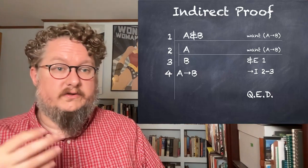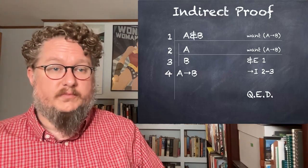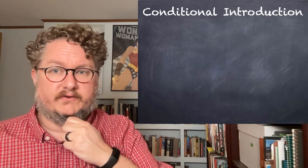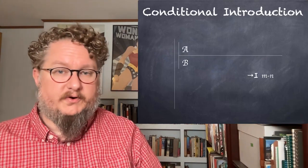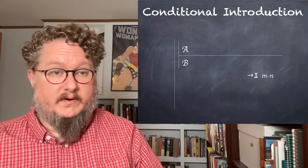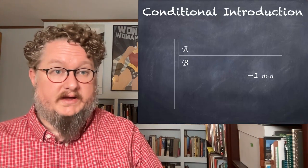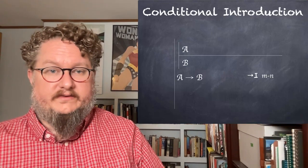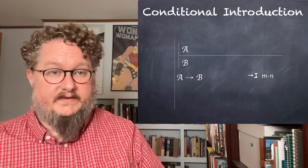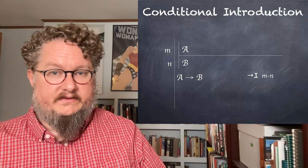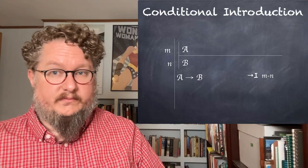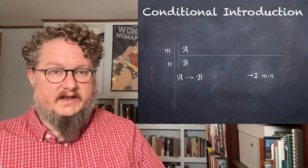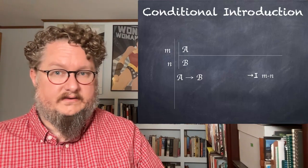I'm going to now go through the additional rules of our natural deduction system that are indirect proof rules. The first we've just looked at an instance of is conditional introduction. You have a sub-proof with A as an assumption — A in script A is a meta-variable for any arbitrary sentence. We are able to derive B, with possible intermediate steps before we get to B. If we do this, then we can introduce the conditional 'if A then B.' We number the lines the sub-proof starts and ends with using M-dash-N, referring to the whole range of lines that constitute the sub-proof — not M comma N, but M dash N. That's an important distinction.